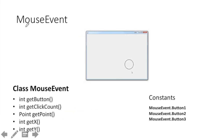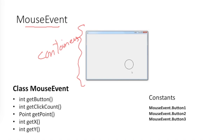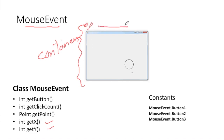Next is MouseEvent, which is generated on containers such as frames, panels, or applets. This class has methods including getX() and getY(), which return the coordinates of the location where the event was generated within the window — with the origin at the top-left corner, X axis horizontal, and Y axis vertical. You can also use getPoint() to get the location as a Point object, and getClickCount() to find how many times the button was clicked.